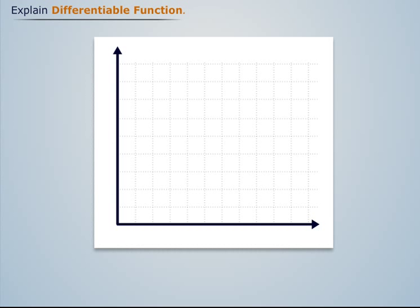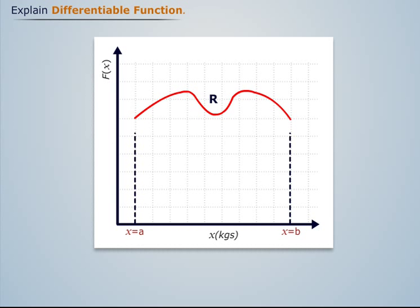Therefore, for a function f(x) defined in a region R, bounded by two lines x equal to a and x equal to b, to be differentiable its graph should be smooth in the region x equal to a to b.